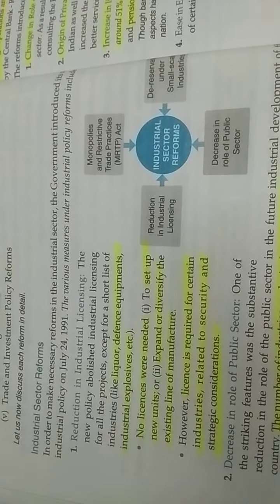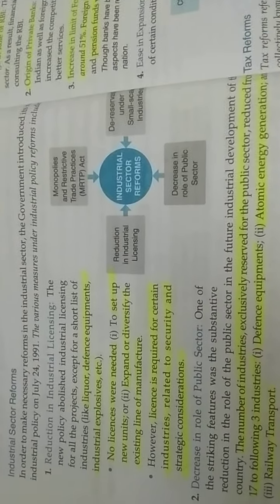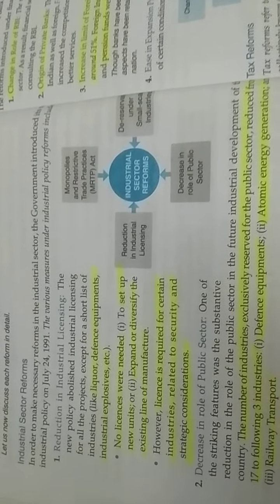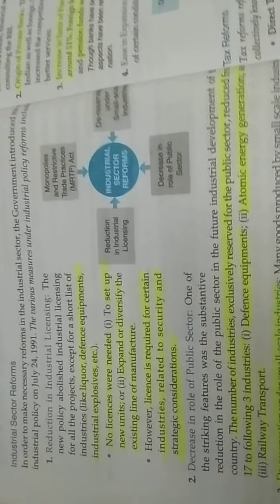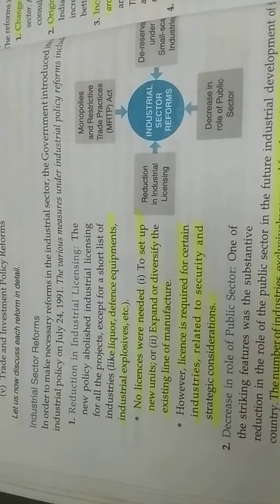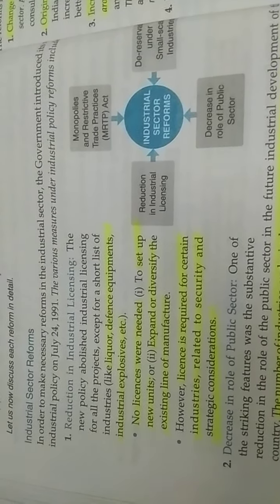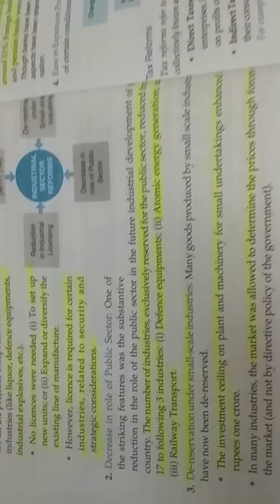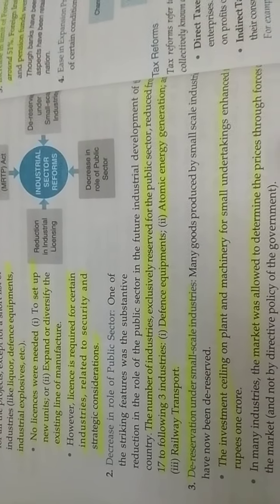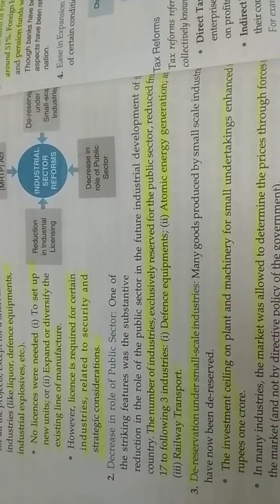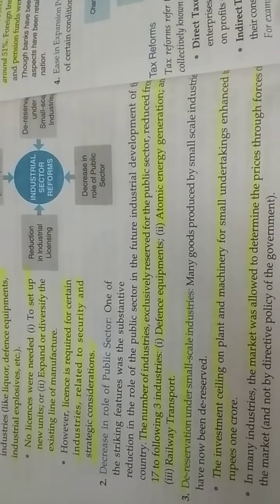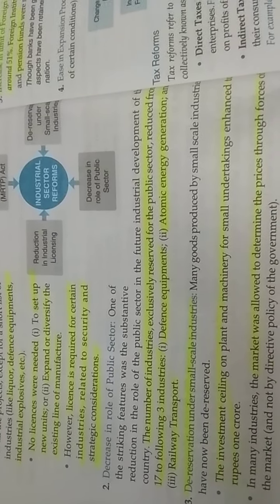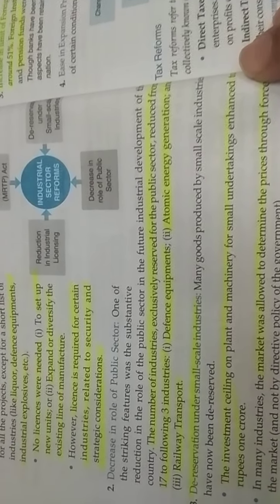Setting up a new business unit, expanding or diversifying a business — no license was required for any of these. Diversification means increasing the product line — if you were producing one type of product and wanted to start another type of production, that is called diversification of product, and that was also allowed. Additionally, the role of the public sector was reduced. The 17 industries previously reserved for the public sector were reduced to only three: defense equipment, atomic energy, and railways. The remaining industries were opened up for the private sector.